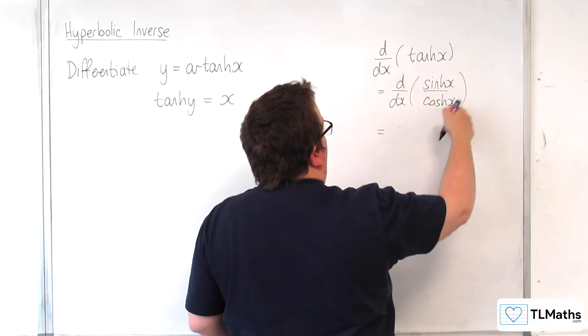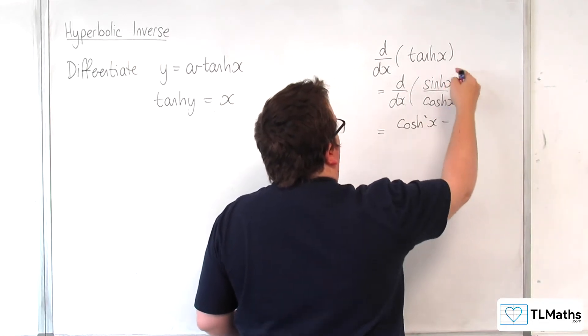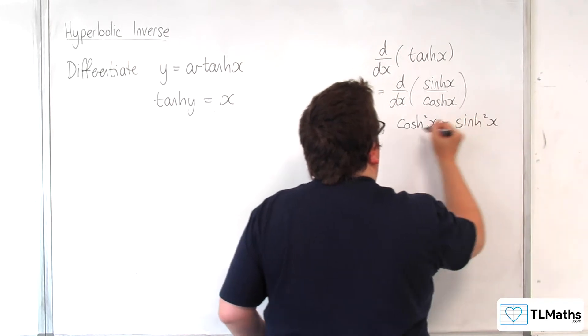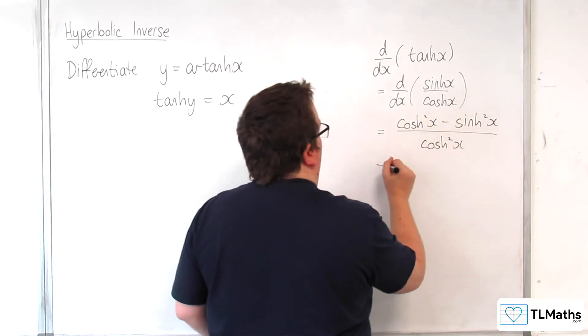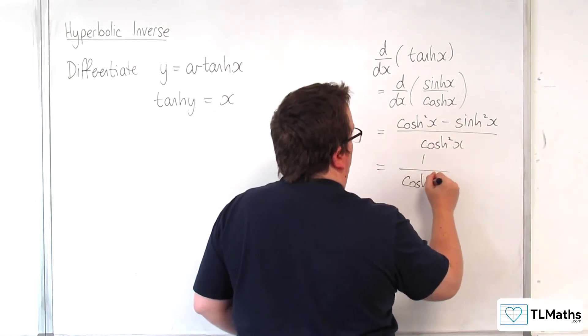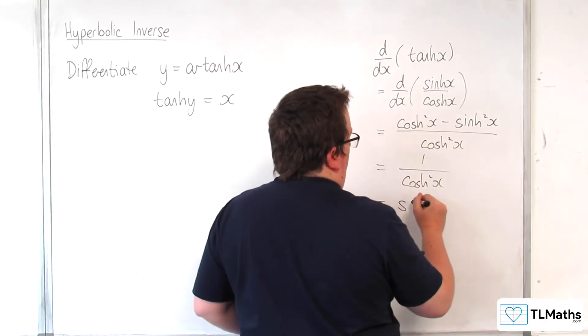Take away the top times the derivative of the bottom, which will be sinh squared x over the bottom squared. Cosh squared take away sinh squared is the identity, so that's 1 over cosh squared x, and this is sech squared.